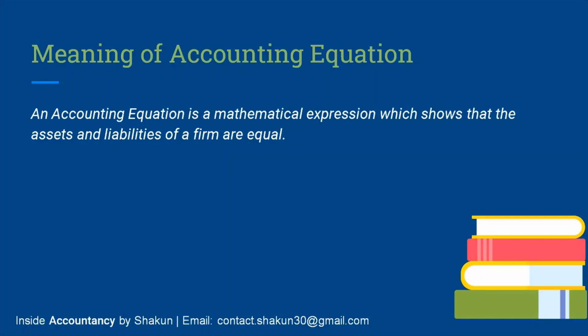The accounting equation is based on the dual aspect concept, which says that every transaction has two aspects — one is debit and the other is credit. This concept holds that for every debit there is an equal and corresponding credit. It means that the total claims of outsiders or the proprietors, also referred to as equities, will always be equal to the total assets of the firm.